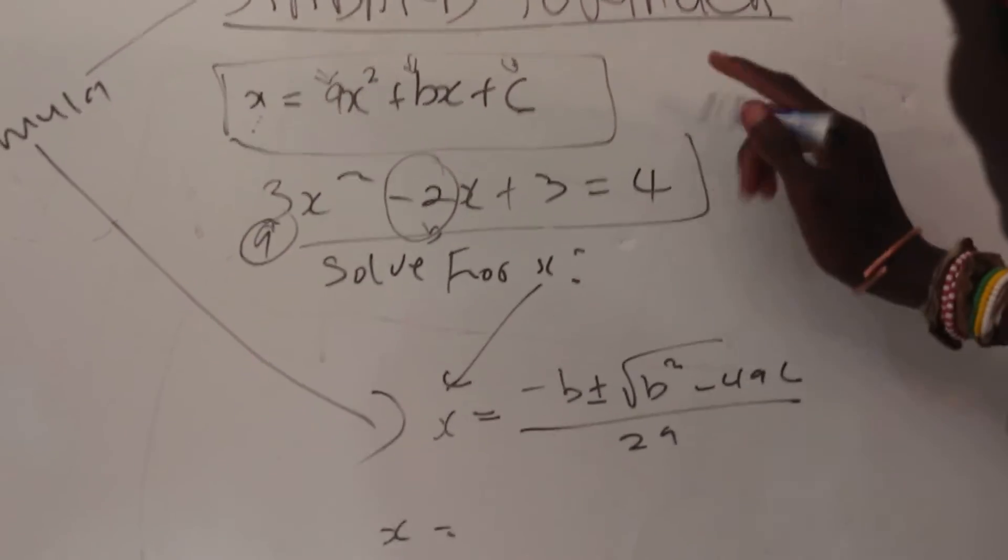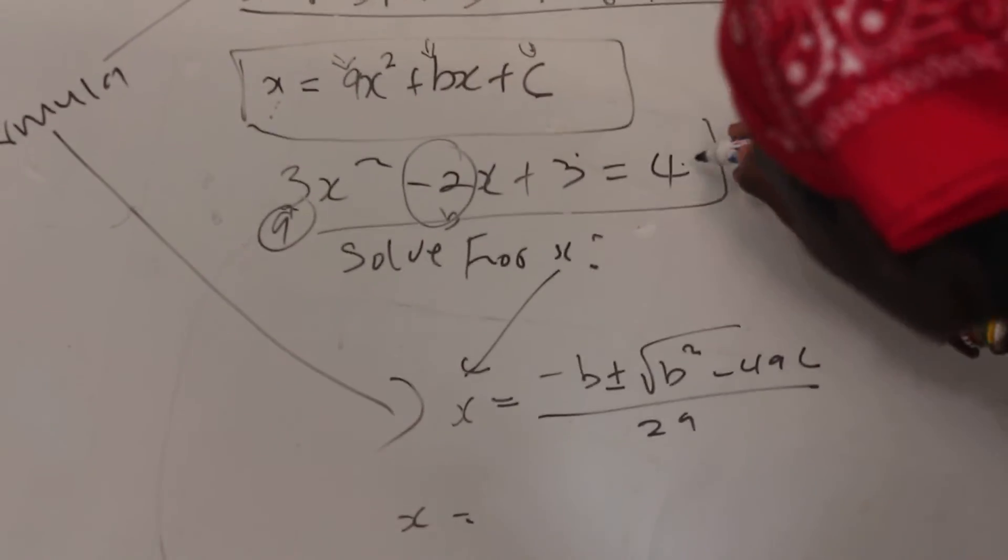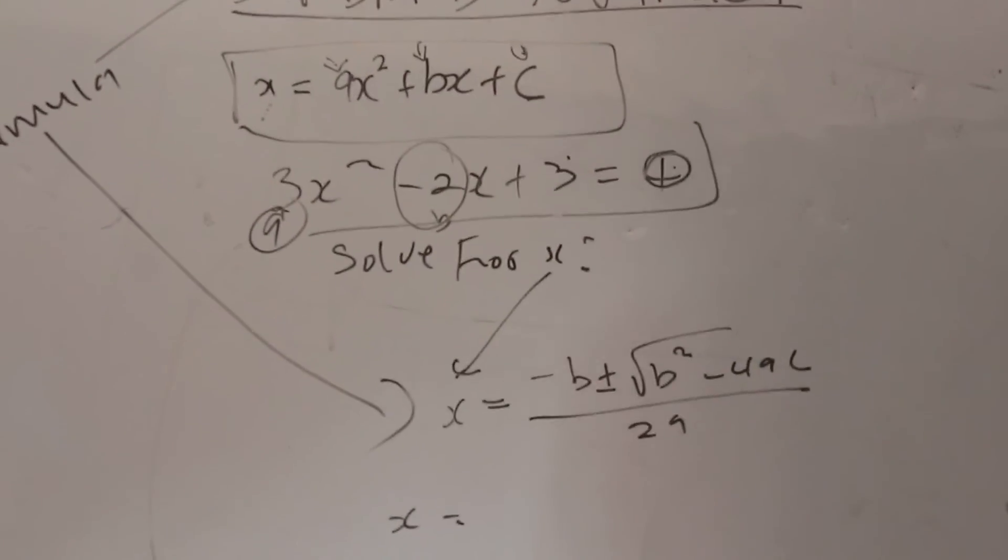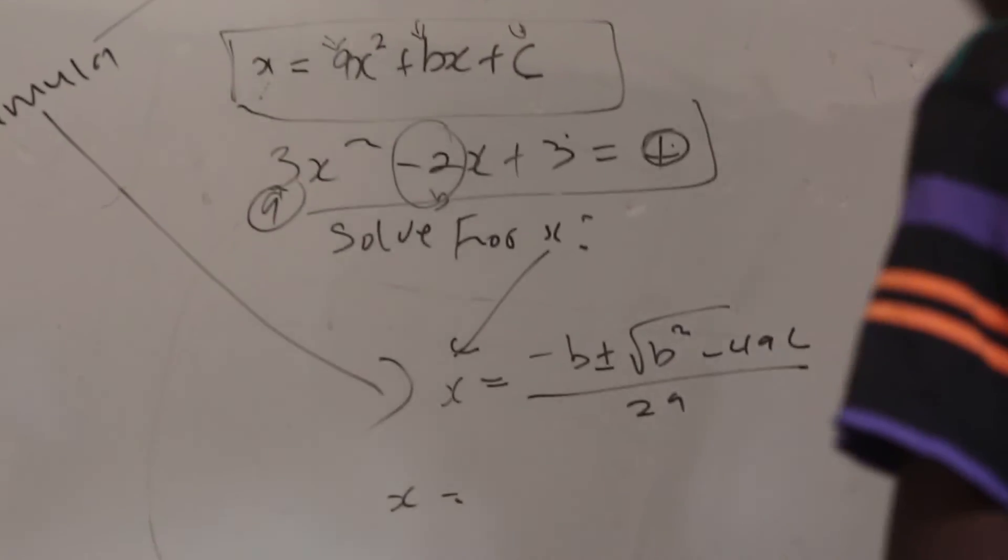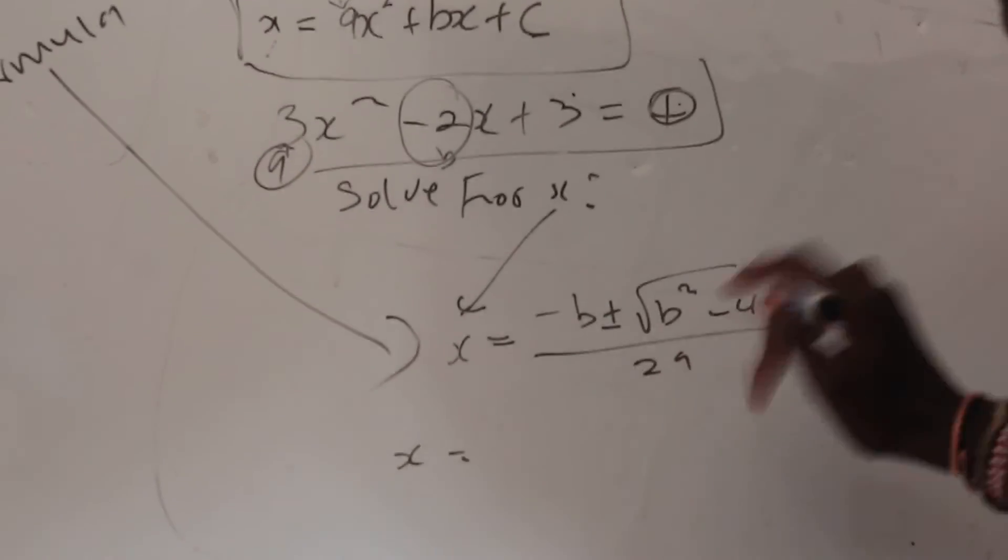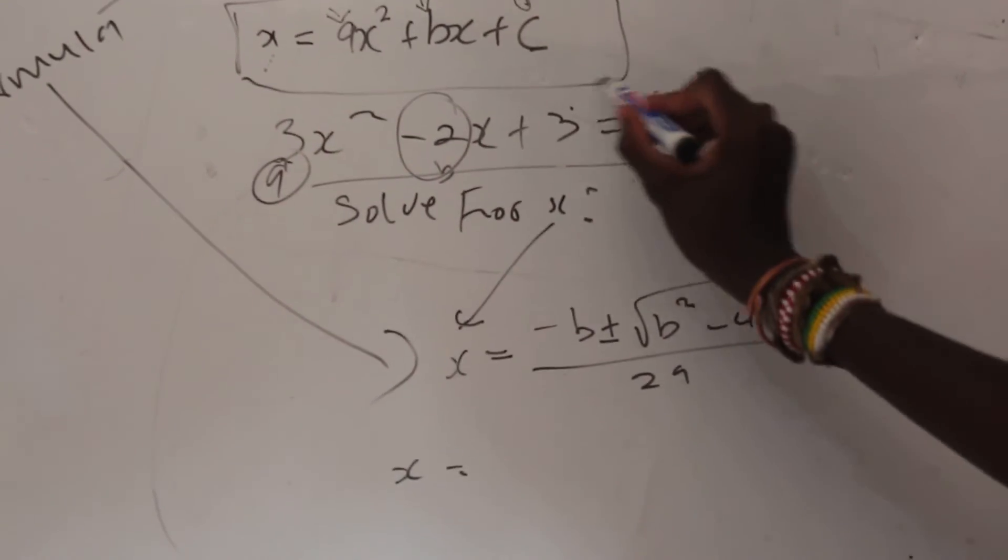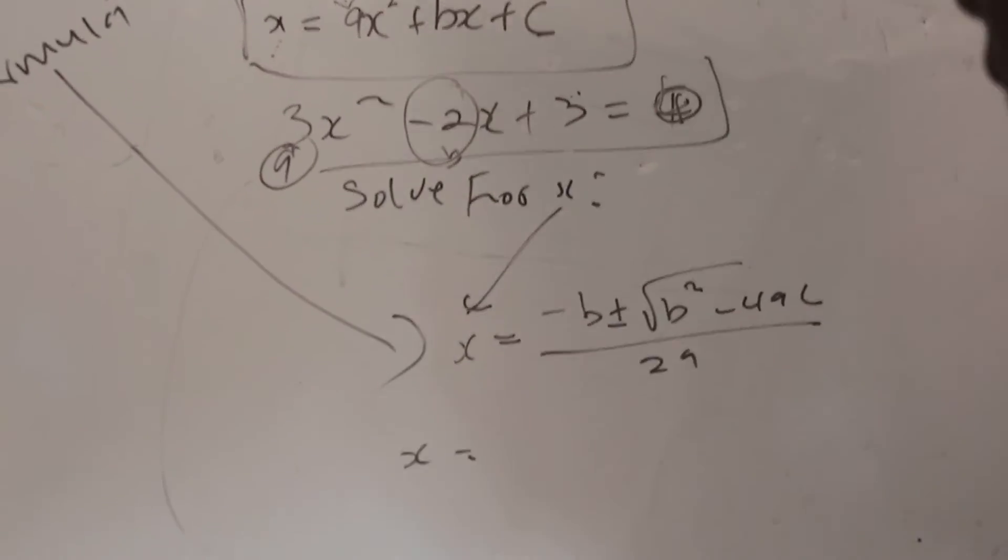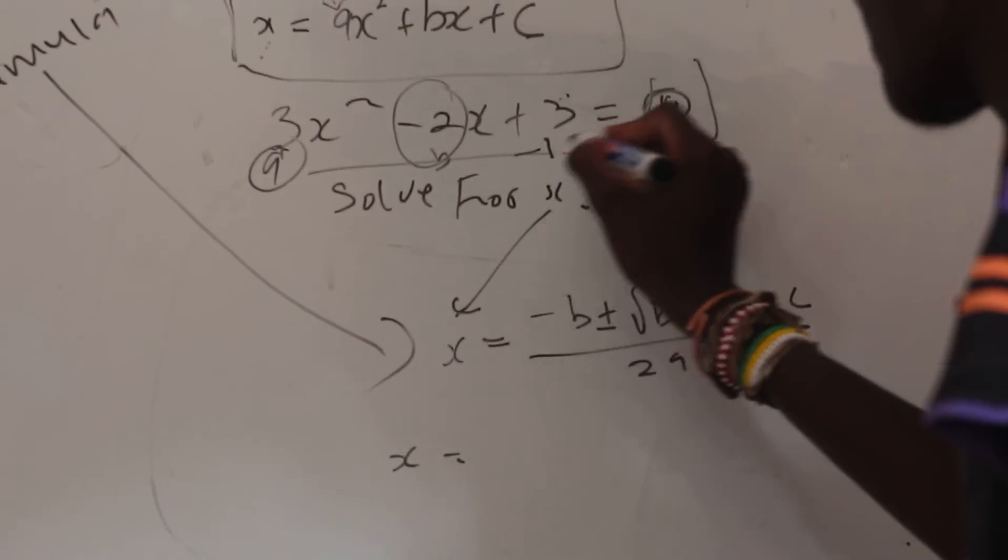I have to take this and bring it to the other side so that this thing can be equated to zero first. So I take this 4 and I bring it to this side. It becomes -4 + 3 which is -1.